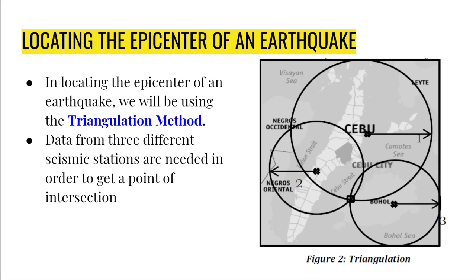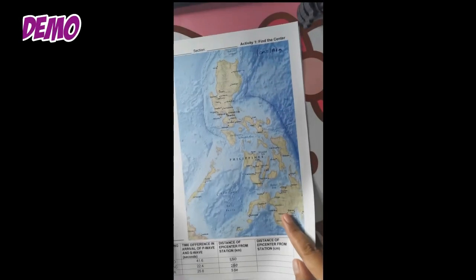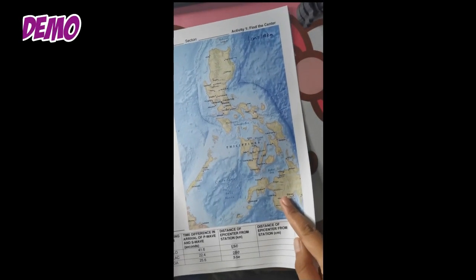Now I will be showing you a demonstration on how to do the triangulation method. In this video, I will be using a different set of data which I have used in my previous classes. Here we have a map of the Philippines, and I have data for three places: Iloilo, Naga, and Tarlac.